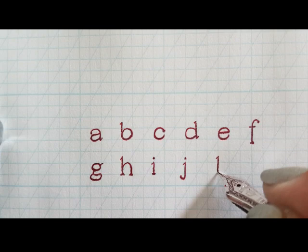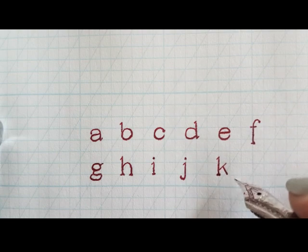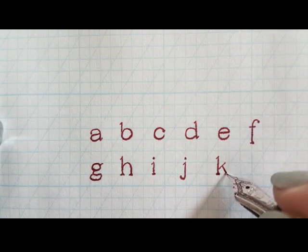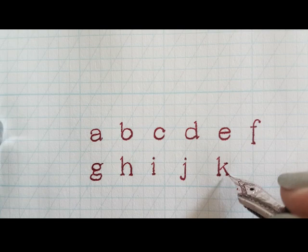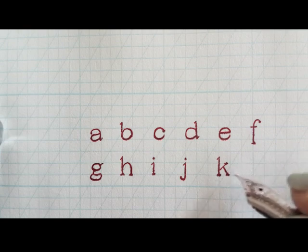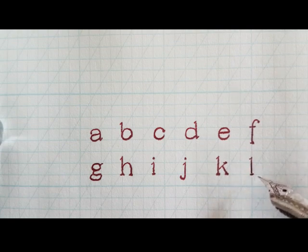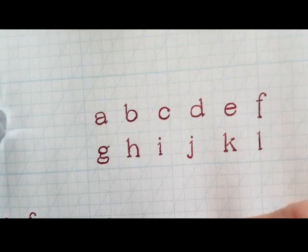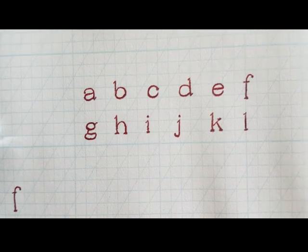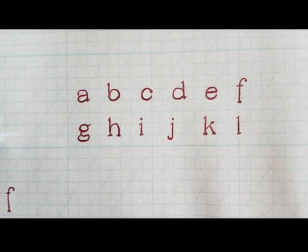For the 'k', I try to make the descending leg just a tiny bit further than the ascending leg to give it a good sturdy base to stand on, otherwise the 'k' is stumbling over. Then the 'l', which is like the 'i' only a bit elongated. Let me move the camera down a bit, sorry for the wonky 'f' in the corner.